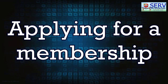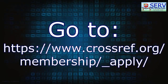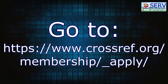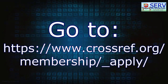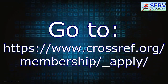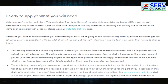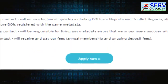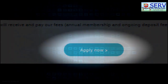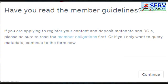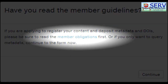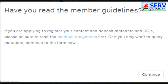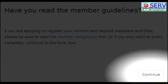Applying for a membership. To apply for a membership, go to www.crossref.org/membership/_apply. Read the requirements needed for application, then click the Apply button at the bottom of the page. After clicking the Apply Now button, a notification will appear. If you want to learn more about the Member Obligations, click the Member Obligations text. If you already read the Member Obligations, click Continue.